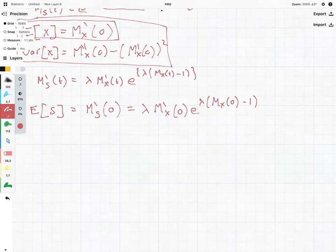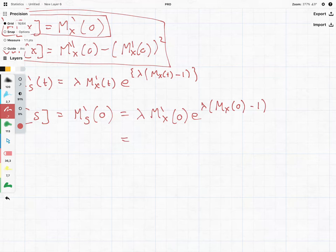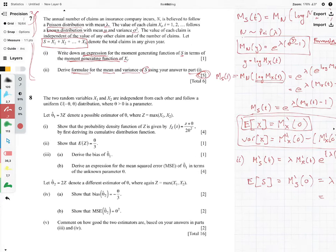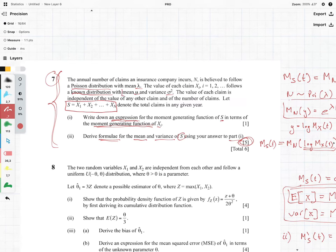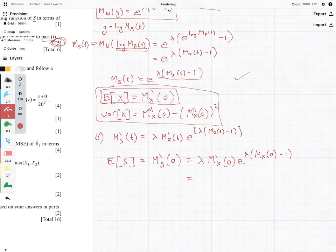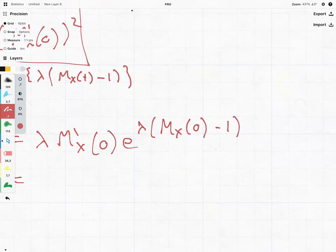And this is where the next step is fairly straightforward. We know that the M'x(0) is equal to the mean. We've been told what that mean is by the parameter mu. And we also know that Mx(0) over here is going to be equal to one,